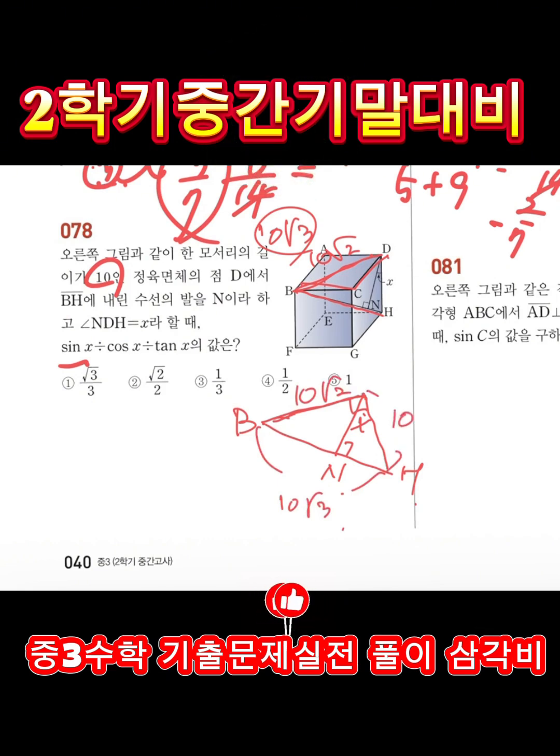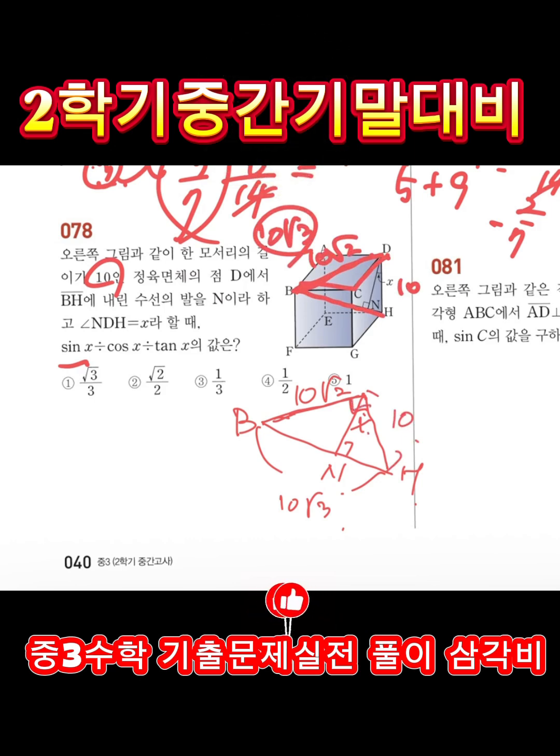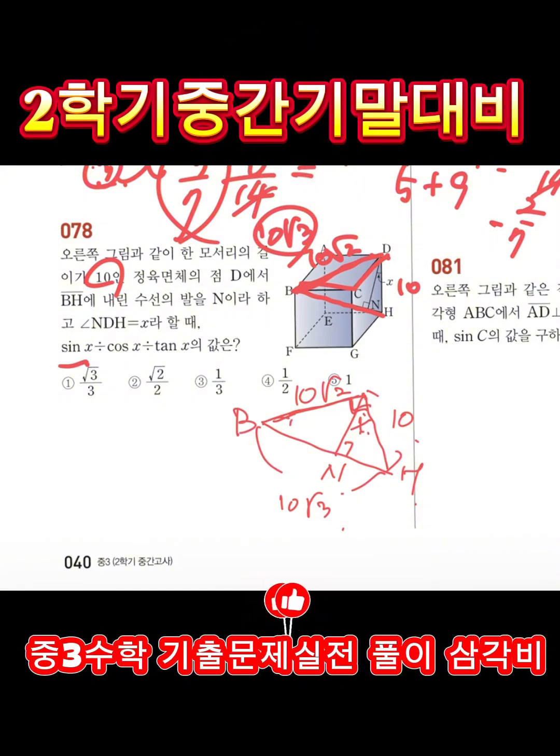Fennec fox with ears so wide! Twisting hips in desert pride! Arctic fox so cool and clean! Slides across the snow we see! It's a straight line!